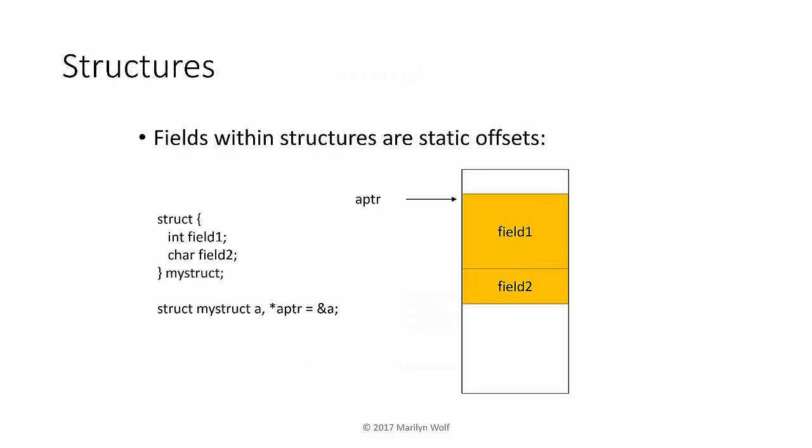In structures we have static offsets. A pointer to the structure points to the zeroth element of the structure. If we know the size of each element we can compute an offset at compile time from that base pointer. For example, field one is four bytes, so to get to field two we take a pointer and add four bytes.